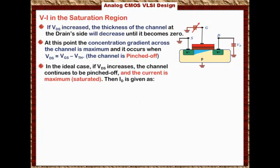If we substitute Vds equals Vgs minus the threshold voltage into the current equation, we end up with the current equation in the saturation region: Id equals one-half times μₙ times Cox times W over L, times (Vgs minus the threshold voltage) squared. All we did was substitute Vds equal to Vgs minus the threshold voltage, because we have used all of the free electrons at the drain side. If Vds increases anymore, the current cannot increase because all the free electrons at the drain side have been consumed.